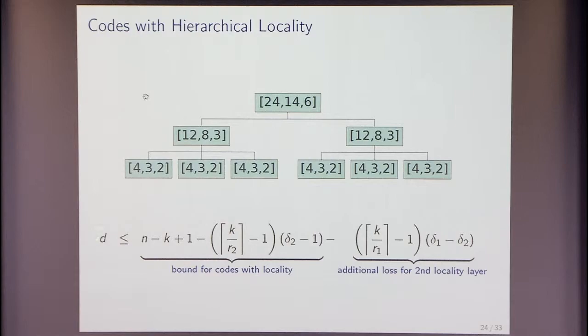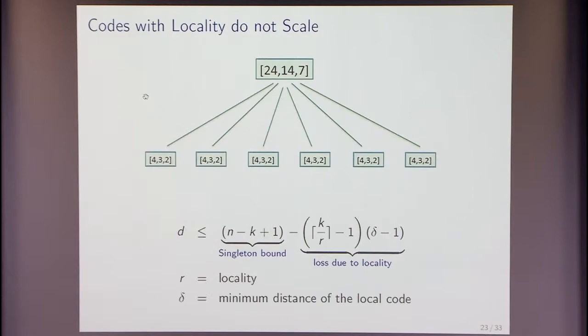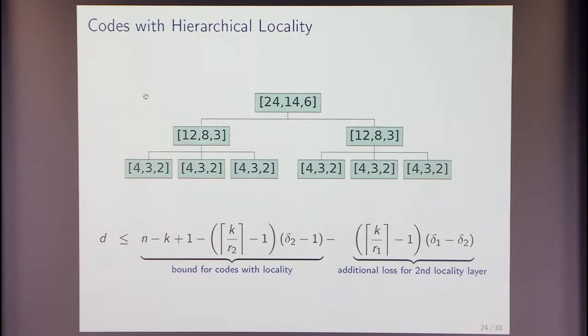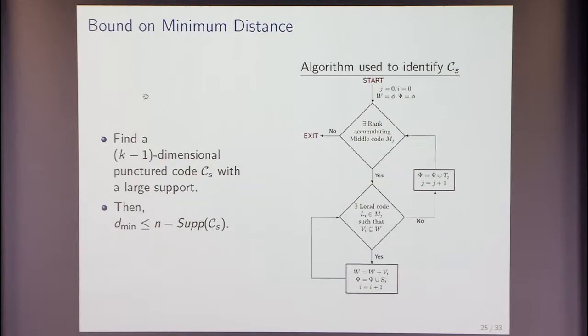And what you get is, so this, now this part over here is the bound on codes for locality, which you can interpret as the singleton bound. Okay, this is the singleton bound, the minimum distance, but then there is a little bit of a loss because you're demanding locality, and here, this is the bound for a code with locality, and because you're demanding this middle locality, you lose some more, and this carries on. Okay, and the proof is very similar. You try to actually construct a k-1 dimensional punctured subcode having a large support, then the minimum distance can be determined from knowing how large that support is. So, the program requires a little bit of refinement, but a similar argument actually holds.